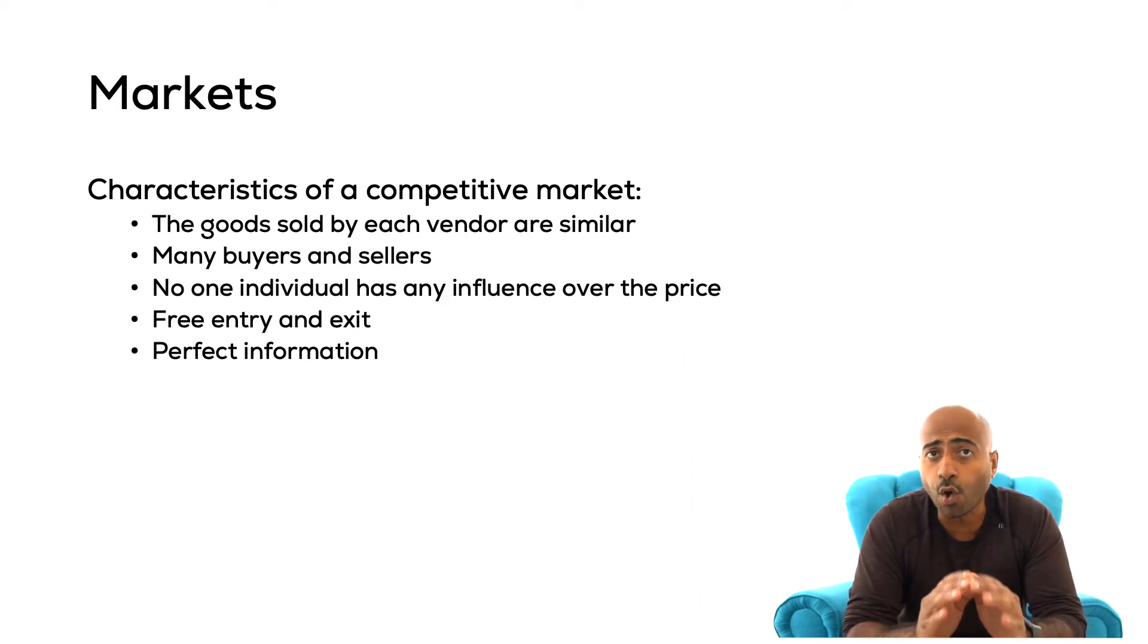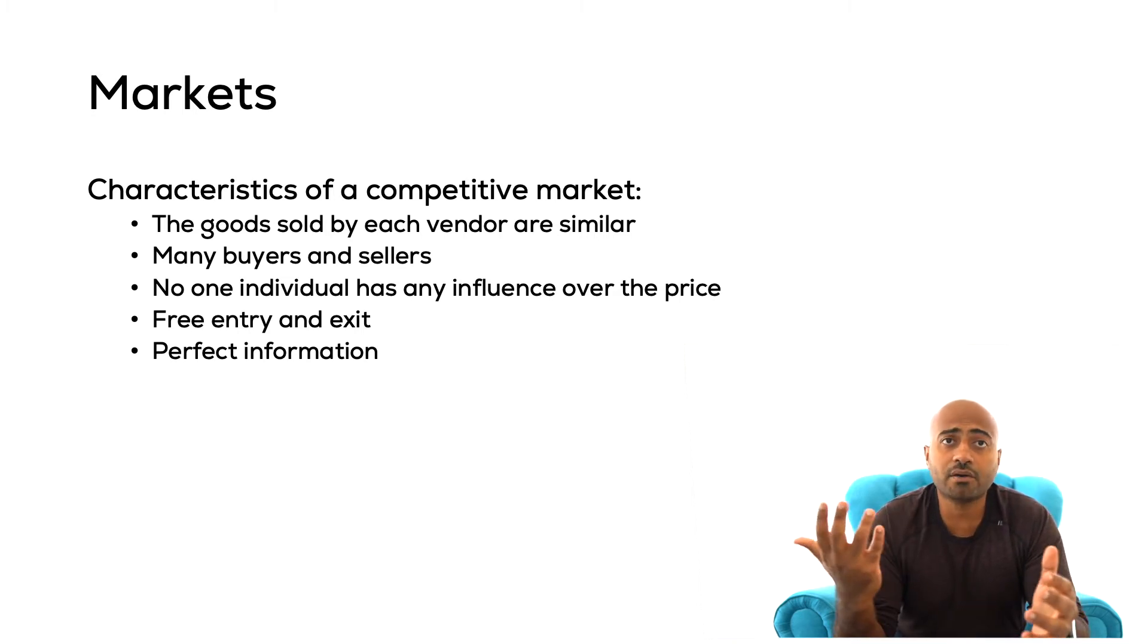This means that no one buyer or seller has an influence on price or impacts the overall market. Competitive markets are also markets where entry and exit by firms is relatively easy. Also information about qualities is assumed to be readily available and information about pricing as well. These are the basic assumptions of the model. Relaxing these assumptions requires us to change the model. We would have to look at imperfect competition models.